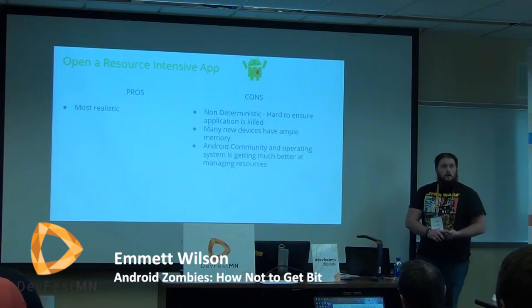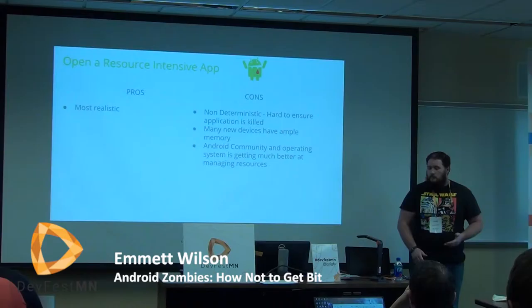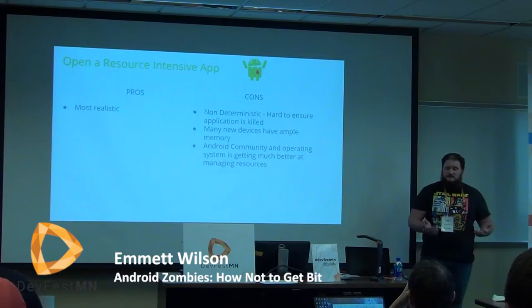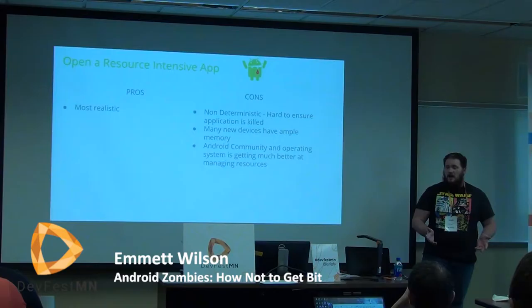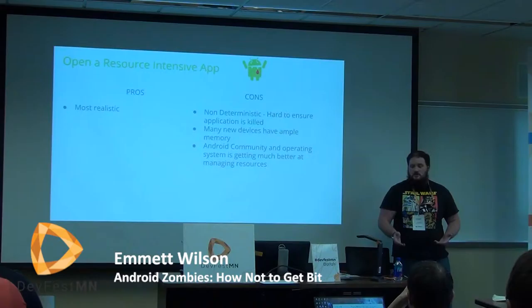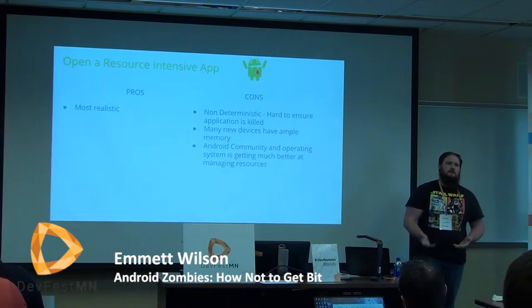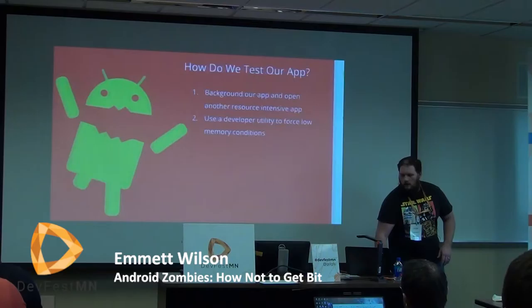The pros and cons of this method: the big pro is it's the most realistic — this is what your user is seeing in the wild. The cons are it's really hard to get this to happen and it's non-deterministic. Some phones, even with 150 Chrome tabs all watching YouTube, will never shut down an app. And unless you have good logging, watching ADB or Logcat to see when process death happens, you don't even know if it's happened. Verifying that your process was killed and you're recovering is hard.